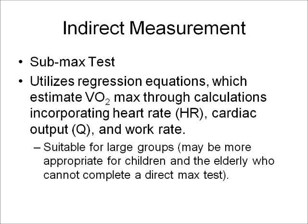Indirect measurement, which we'll do in this lab, is a sub-max test. You'll actually watch Sam do two different sub-max tests. They utilize regression equations which estimate VO2 max through calculations incorporating heart rate, cardiac output, and work rate. Sub-max tests are suitable for large groups, and may be more appropriate for children and the elderly who cannot complete a direct max test.